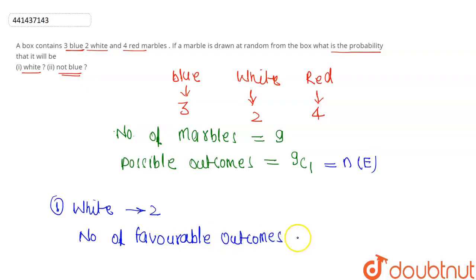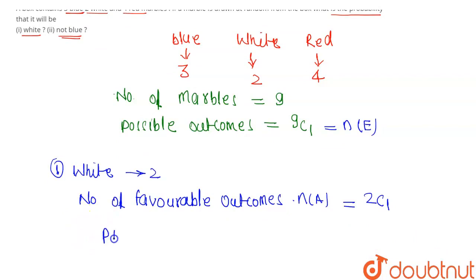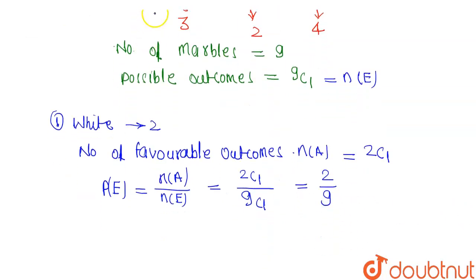The number of favorable outcomes n(A) equals 2c1. The probability of event A equals favorable case over total case, which is n(A) over n(E). So 2c1 over 9c1 equals 2 over 9. This is our answer: 2/9. Now let's look at the second case.